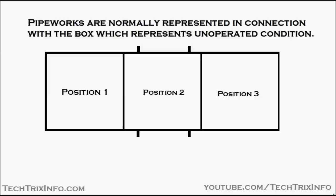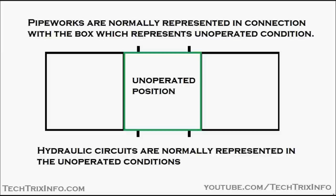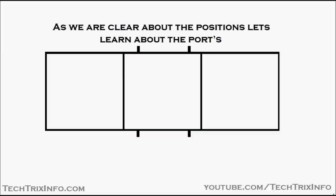The pipework is normally represented in connection with the box which represents the unoperated condition. The unoperated condition here is position two, where all the ports are blocked. Hydraulic circuits are normally represented in the unoperated condition, and the pipework is shown connected to that center box.